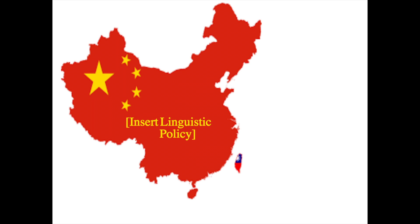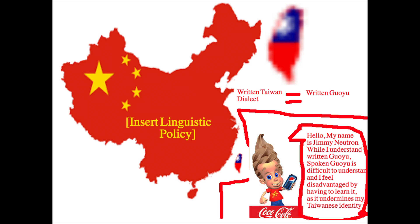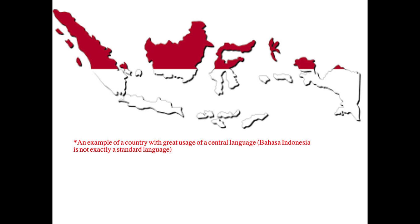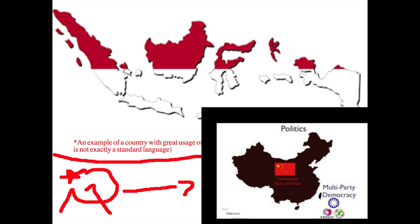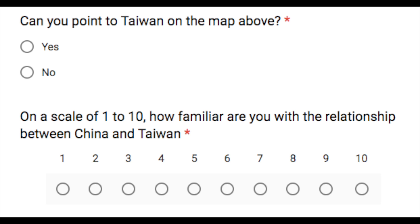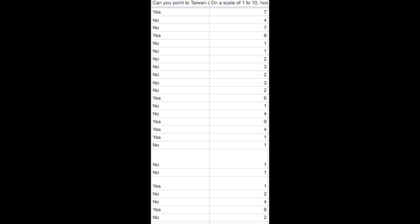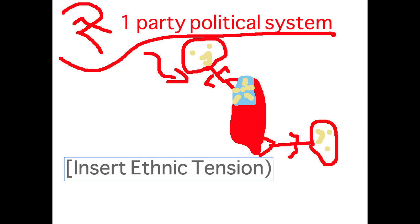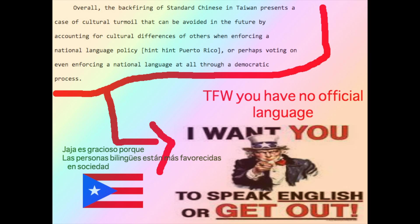This component of standard Chinese policy had a great effect on Taiwan. Although written Chinese and Taiwanese are practically identical to each other, spoken Taiwanese is very different from spoken Chinese — you could say it's a far-removed dialect, and it's even more different when compared to a constructed, more formalized language like Guoyu. The intent of implementing a standardized language in nations is not always a bad idea, but when governmental bodies don't represent the people they rule, a standardized language created by a misrepresentative government is bound to face backlash. In the case of post-World War II Taiwan, the standardized language was a major source of conflict for the native Taiwanese people. The undemocratic language planning and execution of Guoyu was a big contribution to ethnic tensions that arose between pre-war nationals and post-war immigrants in Taiwan. Overall, the backfiring of standard Chinese in Taiwan presents a case of cultural turmoil that can be avoided in the future by accounting for cultural differences when enforcing a national language policy, or perhaps voting on even enforcing a national language at all through a democratic process.